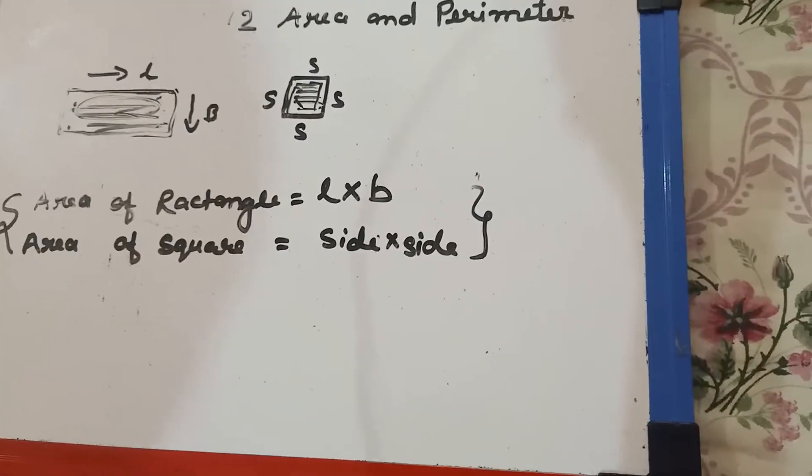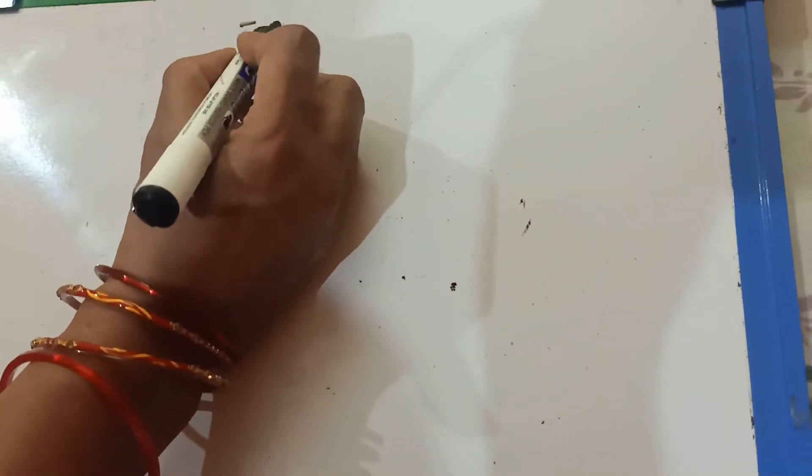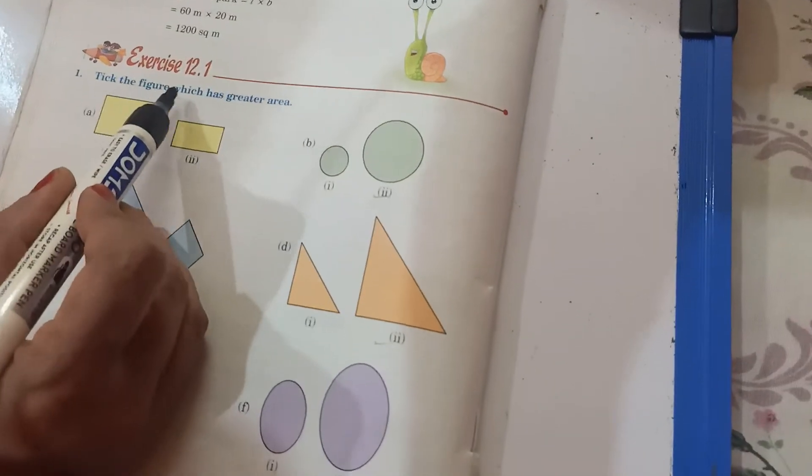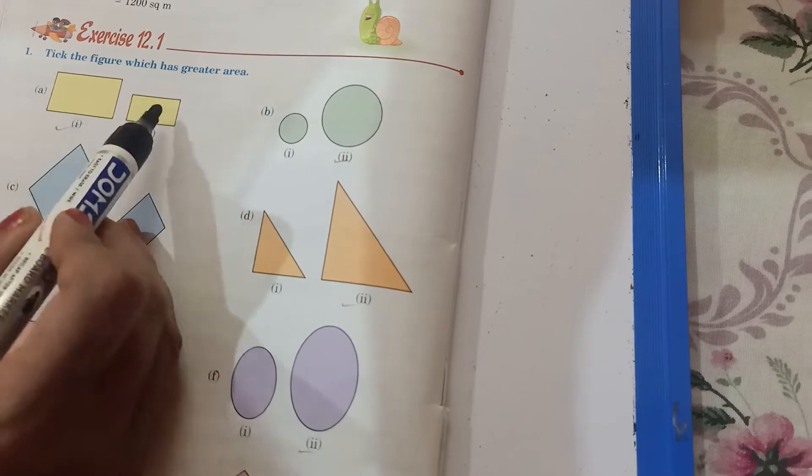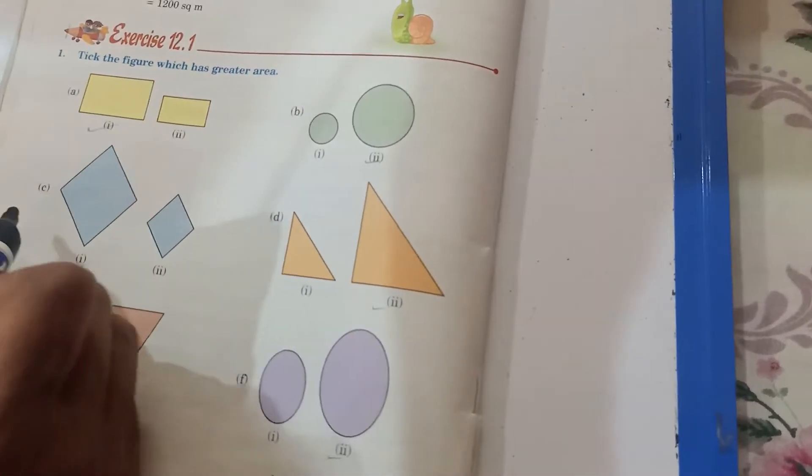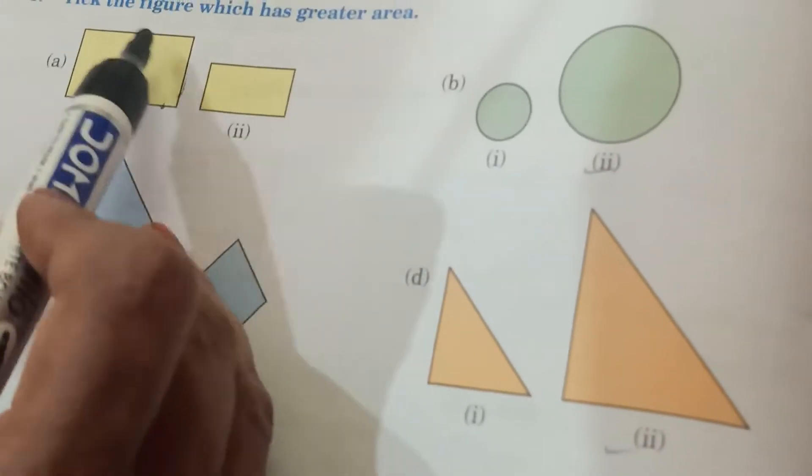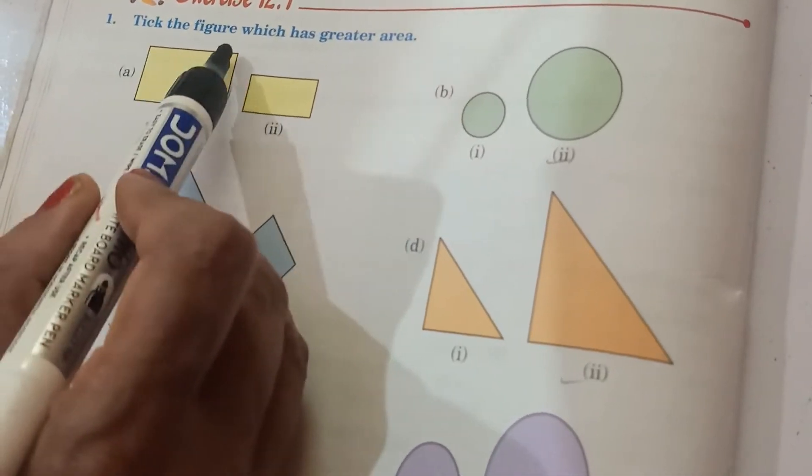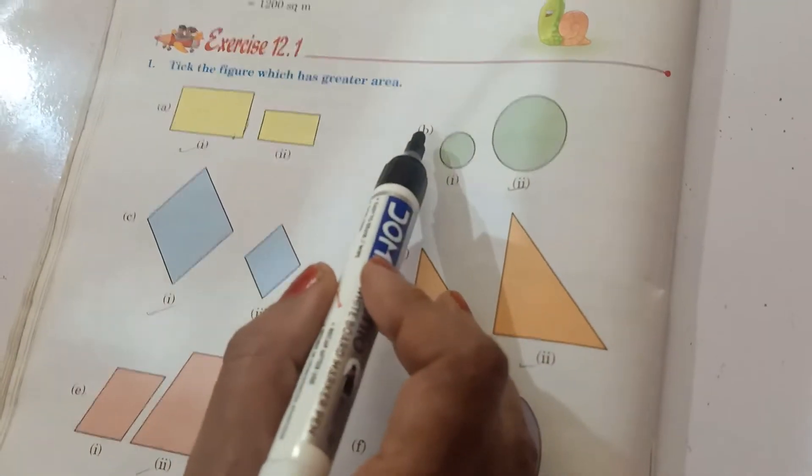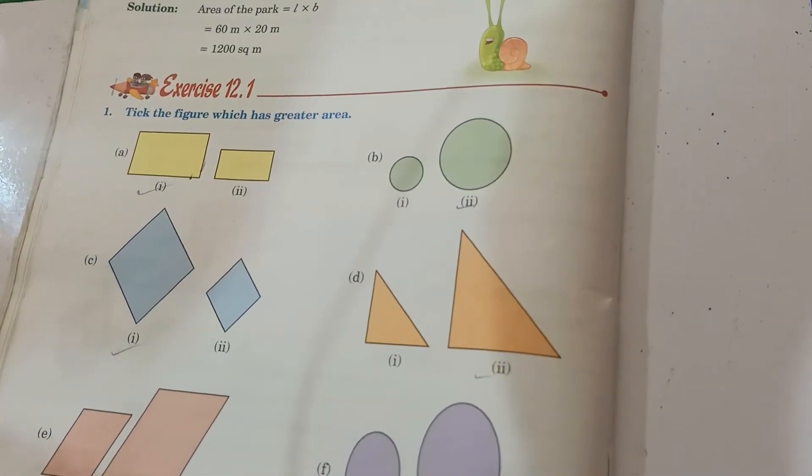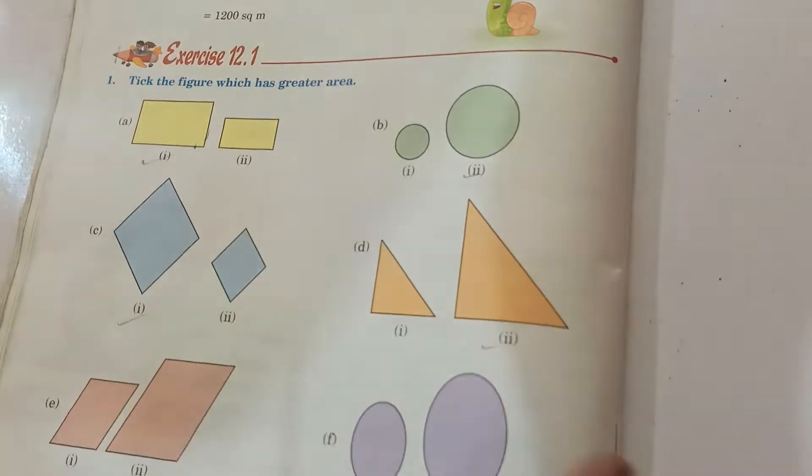So children, without wasting my time, I am going to start exercise 12.1 from your textbook. Look carefully in your textbook. Number one is take the figure which has greater area. By seeing the picture, you can find out which one is the greater one. Because the area enclosed by the length and breadth is called area. You are seeing number one area is bigger than number two area. In same number B, you see which area? Definitely number two. Like this you will do. You take in your book and you can do question number one easily.